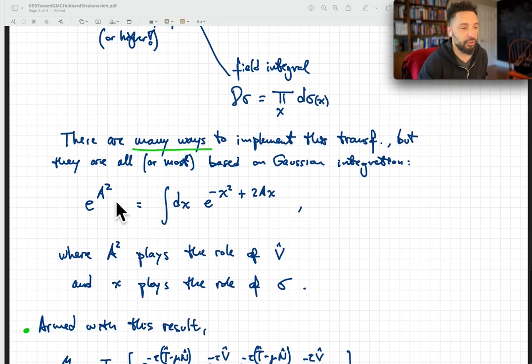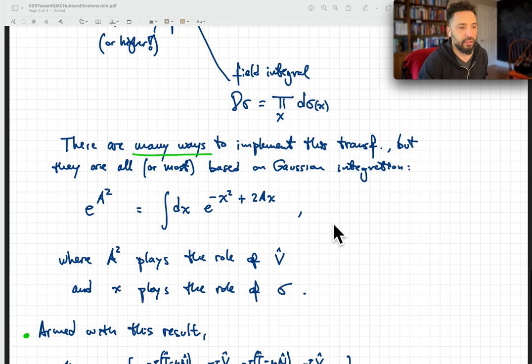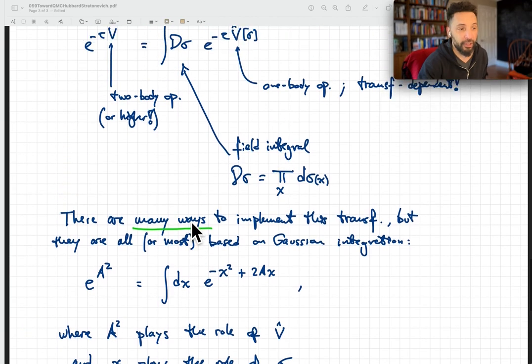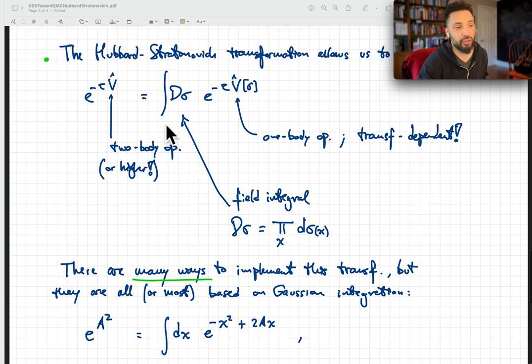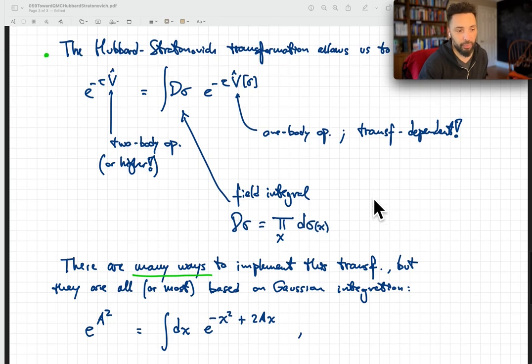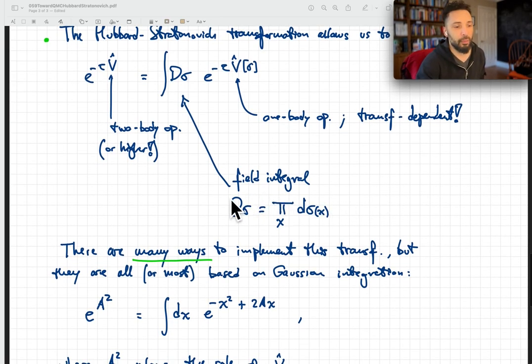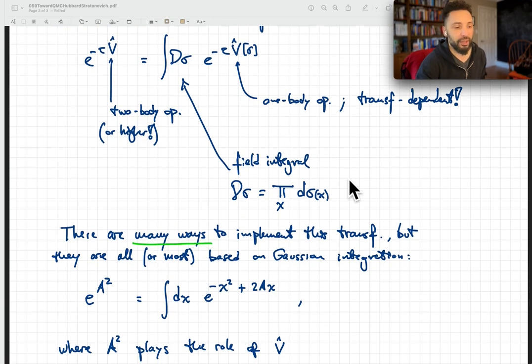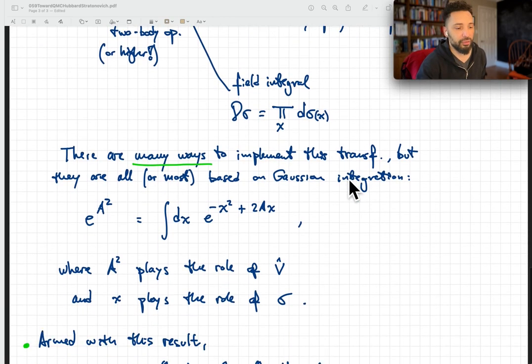This sigma that we call here is what we call an auxiliary field. That is the basis of the Hubbard-Stratonovich transformation. Once again, there's an overall constant here that I didn't write just for clarity. But this is the basis of most of the Hubbard-Stratonovich transformations. There are flavors where this integration becomes a sum, a very large sum of all points in space. We'll come back to that in a future video.